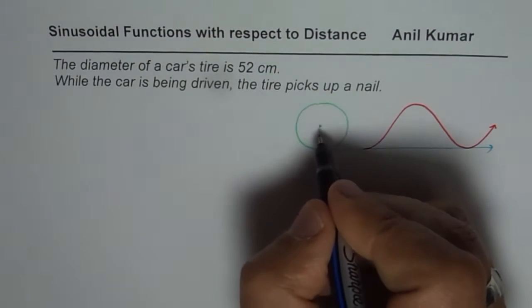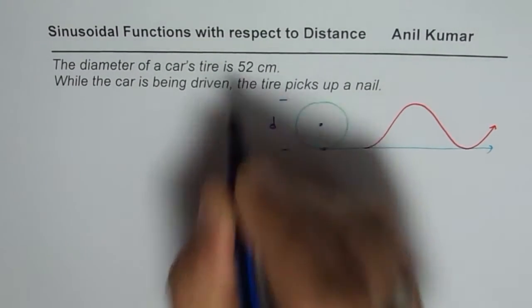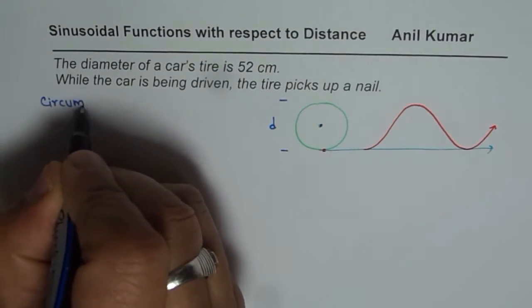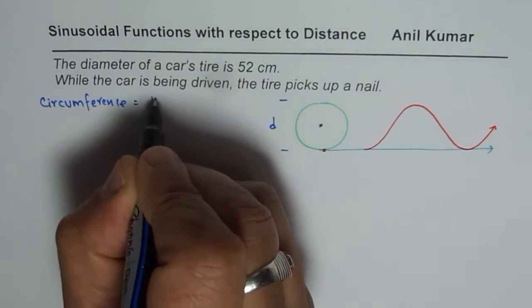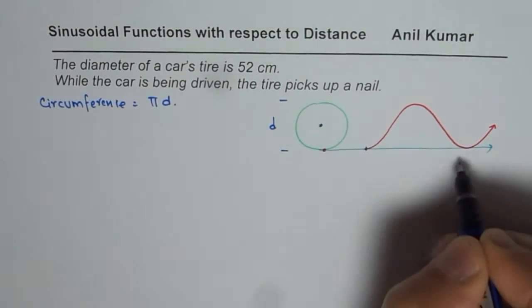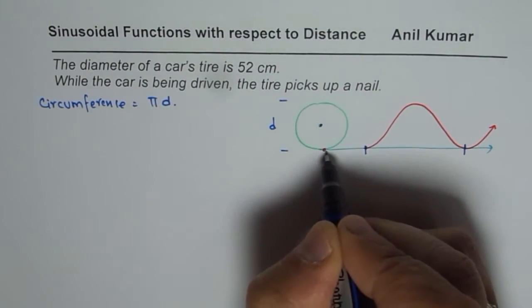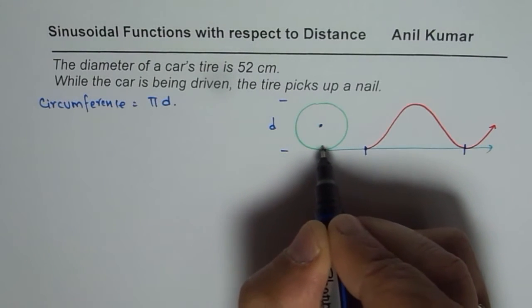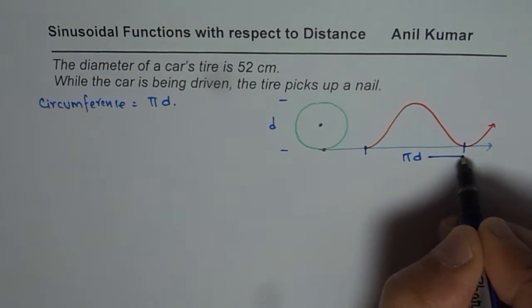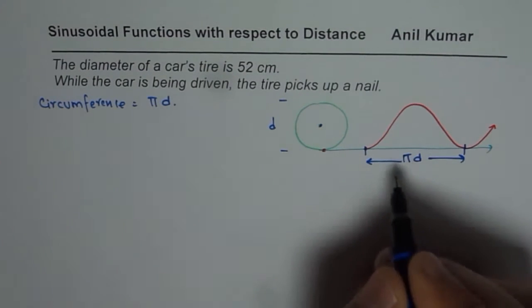In general if the diameter is D, circumference is π times D. So what will happen is one full circle means πD. The nail which is picked up will come back to its original position after travelling a distance throughout the circumference which is πD. So this distance will be π times D. So the time period for your sinusoidal function is πD.